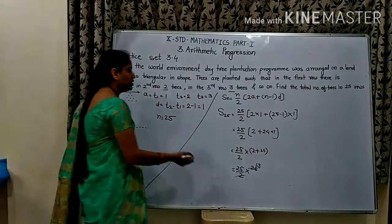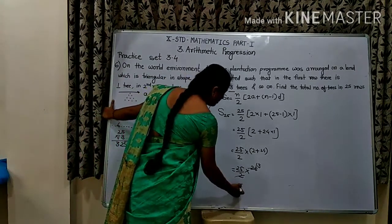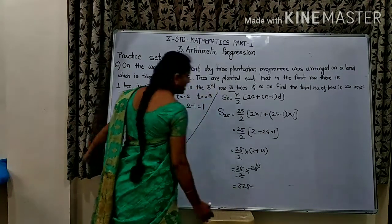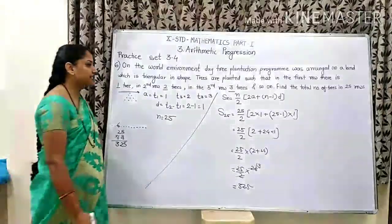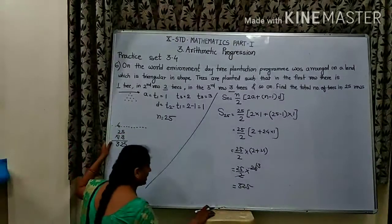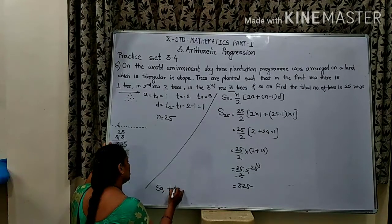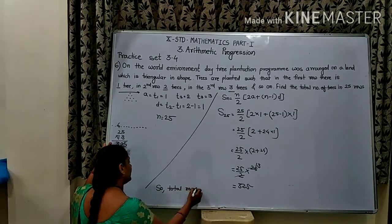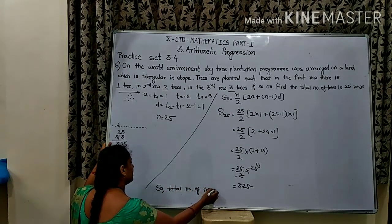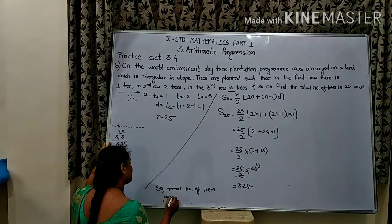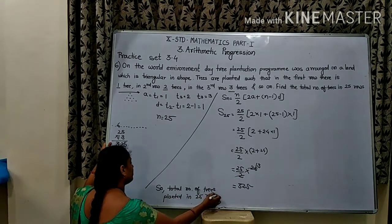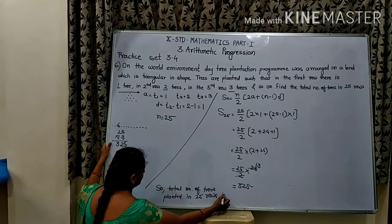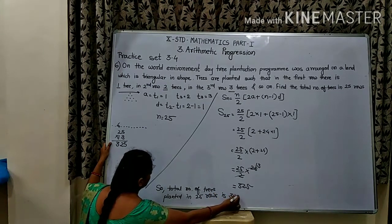So the total number of trees planted in 25 rows is equal to 325.